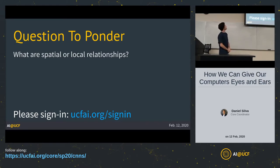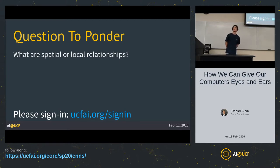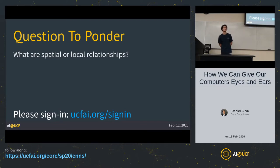So what are spatial or local relationships? Does anyone have a general idea? Maybe spatial is like XYZ — I'm sitting here, he's sitting there. Maybe like a physical relation to where things are located in space? Yeah, okay.